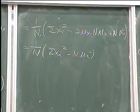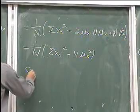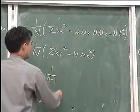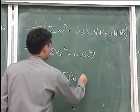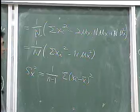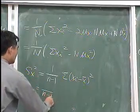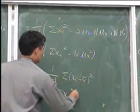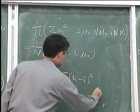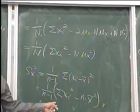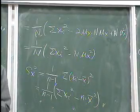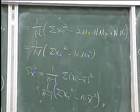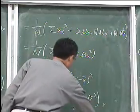You should try on your own to verify that the sample variance formula s-x-squared equals [1/(n−1)]·[summation xi-squared minus n·x-bar-squared]. This is the simplified computational form.